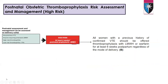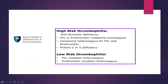High-risk thrombophilia includes: antithrombin deficiency; Factor V Leiden or prothrombin mutation — homozygous; compound heterozygous for Factor V Leiden and prothrombin; or protein C or S deficiency. Low-risk thrombophilia is Factor V Leiden mutation heterozygous and prothrombin mutation heterozygous.